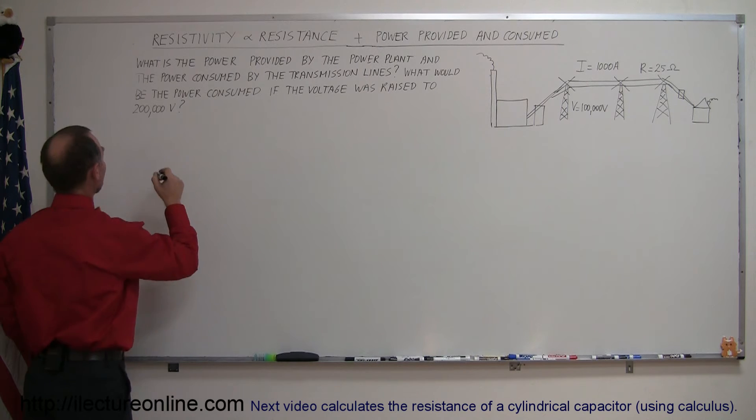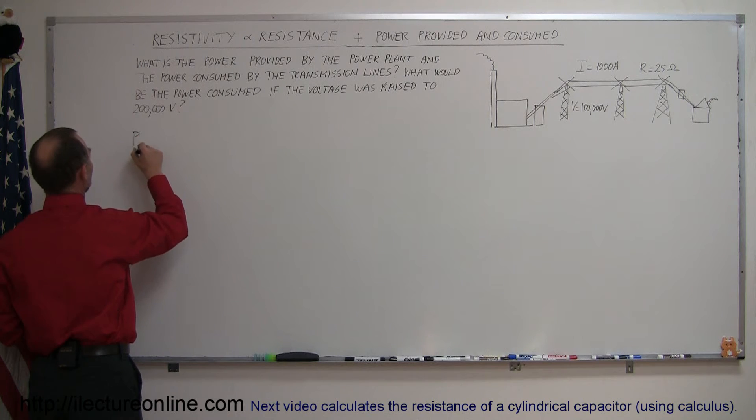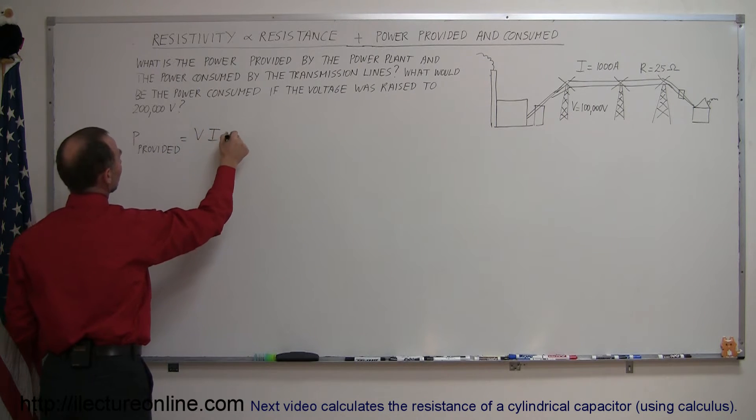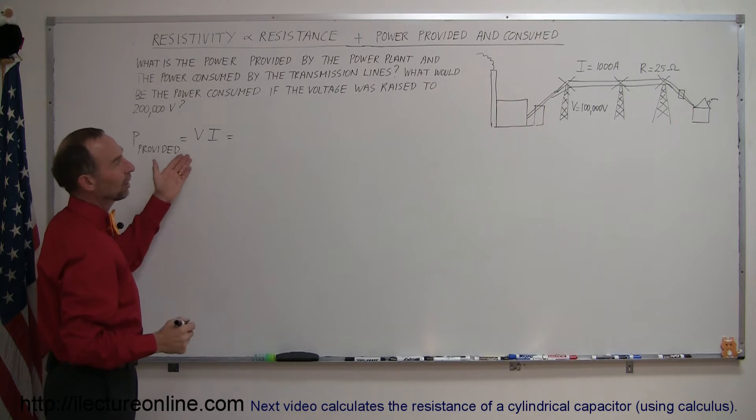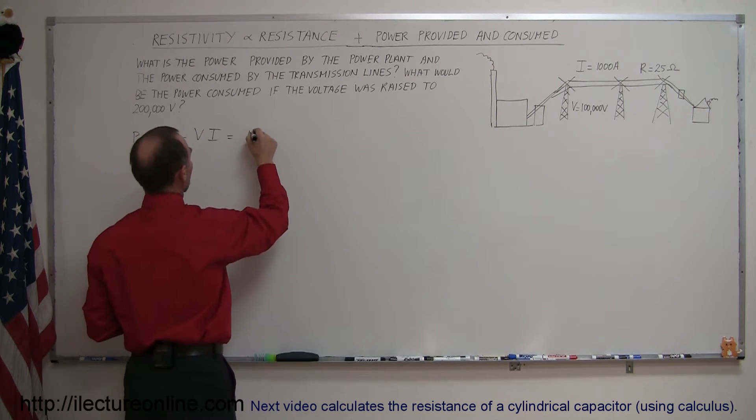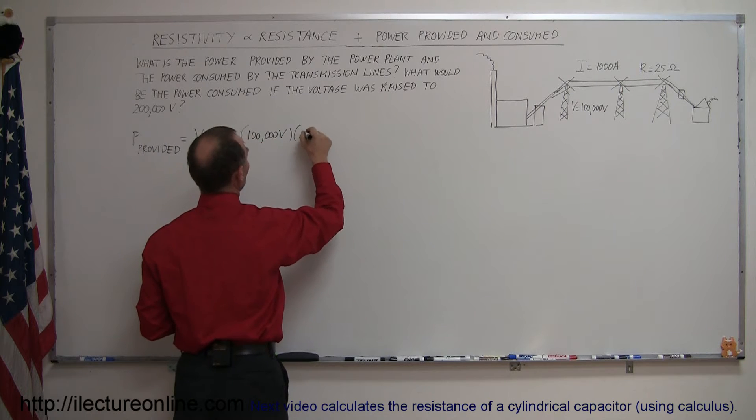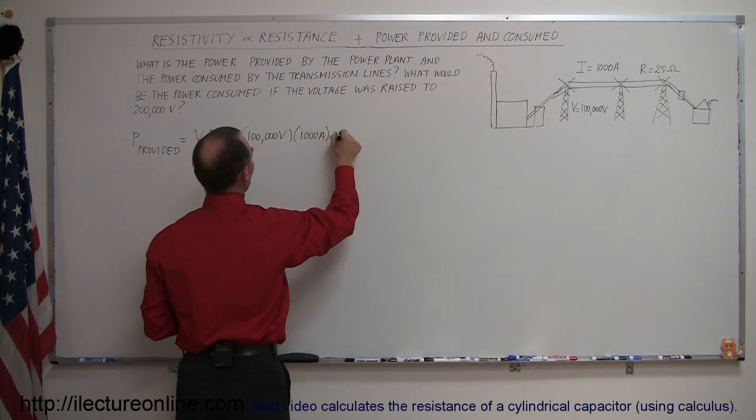So again we know that power provided is equal to the voltage times the current on the line. So in this case the voltage is a hundred thousand volts and the current is a thousand amps.